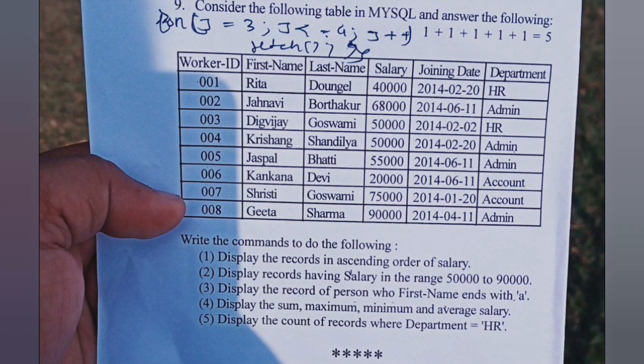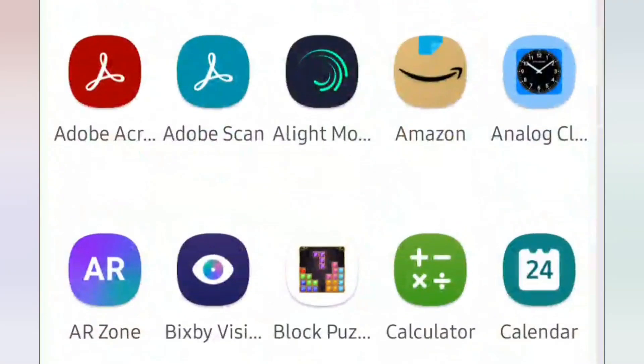Welcome, I'm Rafiq. In this video I'm going to show you how we can do MySQL practical on mobile. This is a question sent by one of my subscribers. We have to create a table in MySQL — the table contains columns: worker ID, first name, last name, salary, joining date, and department, with some values. After that we have to answer some questions.